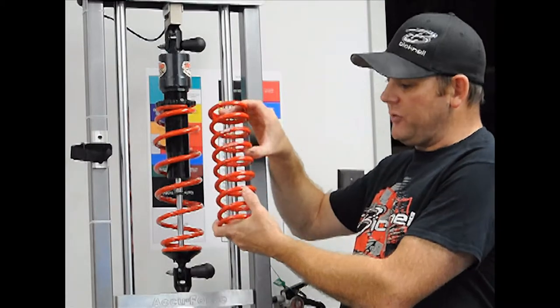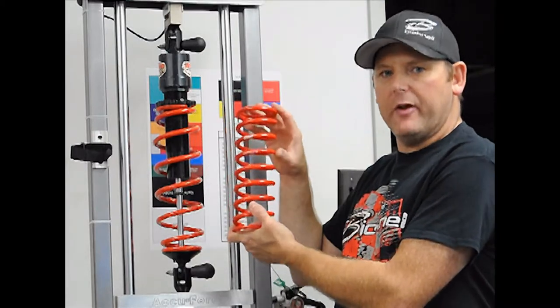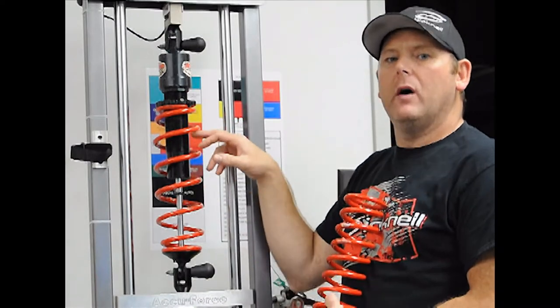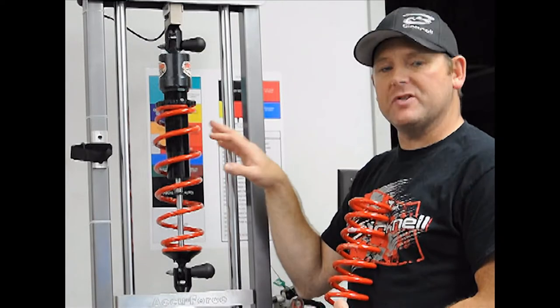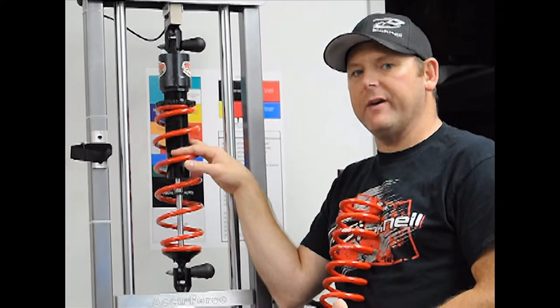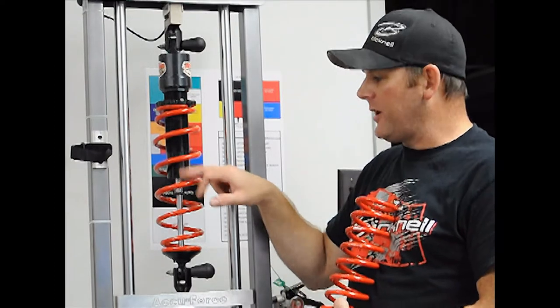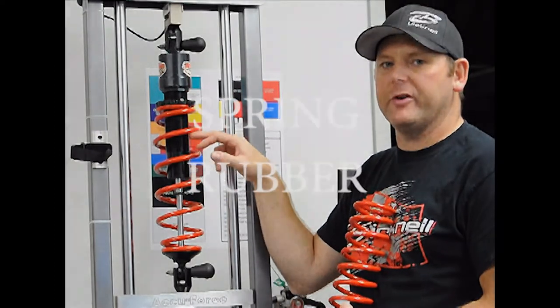As you compress this, these coils get closer together—eventually they're going to touch each other and coil bind. Whereas this spring has a lot more travel. If you have a real soft right front spring, a 12 inch spring is probably a better choice on the right front, especially a 25-30 series, because you're going to get a lot more travel before them coils start to touch each other.